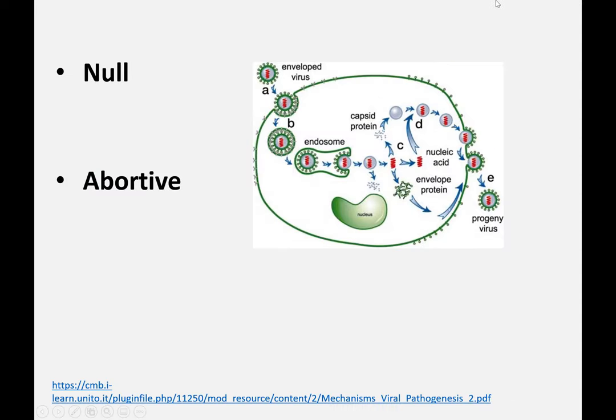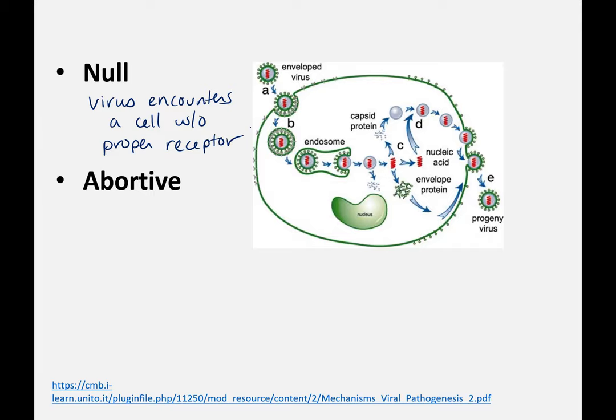There are two types of virus infections that don't cause any issues. A null infection is when a virus encounters a cell without the proper receptor, so there's really no infection at all. Think about tissue tropism: a virus floating throughout your bloodstream or respiratory system — if the cells don't express the correct receptor, there is not going to be an infection. An abortive infection means the host cell is lacking some specific proteins the virus needs, which means the virus cannot replicate.